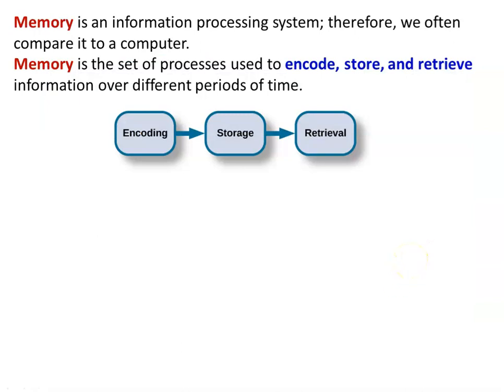Memory is an information processing system, which is why we often compare it to a computer. Short-term memory can be compared to RAM and long-term memory to the hard disk. Memory is the set of processes used to encode, store, and retrieve information over different periods of time. Encoding, storing, and retrieval are the key processes. Whatever the sensory memory passes to short-term memory involves encoding the information, and when a question arises, it involves decoding — encoding and decoding are taking place inside the memory.